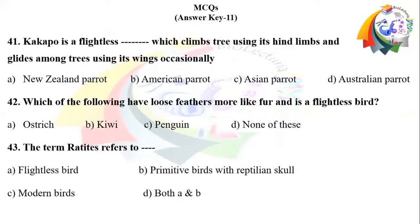Answers: Question 41 right option A — kakapo is a flightless New Zealand parrot. Question 42 right option B — kiwi; kiwi has loose feathers which are like fur and it is a flightless bird. Question 43 right option D — both A and B; the term Ratitae refers to flightless birds and primitive birds with a reptilian skull.